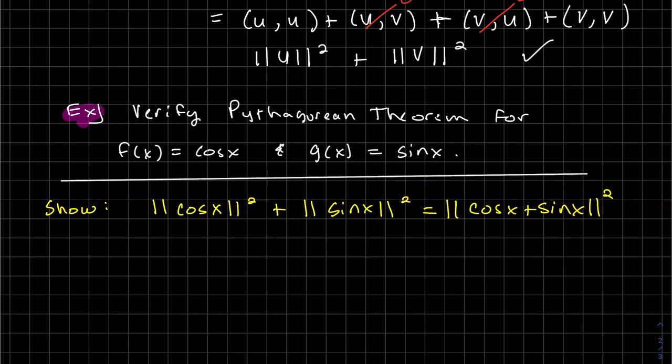So just to write out what we want to show, we want to show the Pythagorean Identity Theorem is true for the two functions f(x) = cos(x) and g(x) = sin(x). So I wrote it out: the magnitude of cos(x) squared plus the magnitude of sin(x) squared equals the magnitude of the sum of them squared. So we just got to show each of these and show that they're equal.